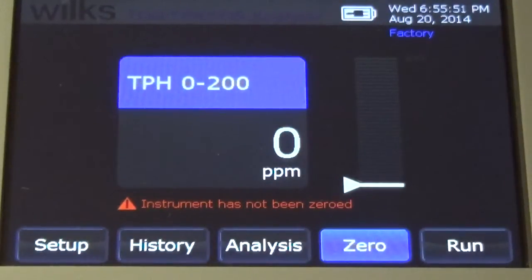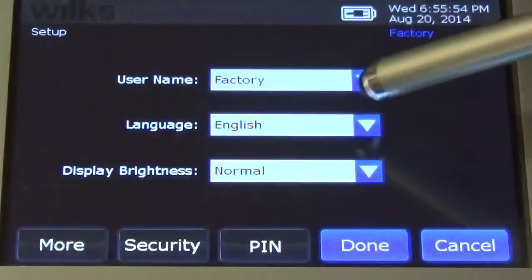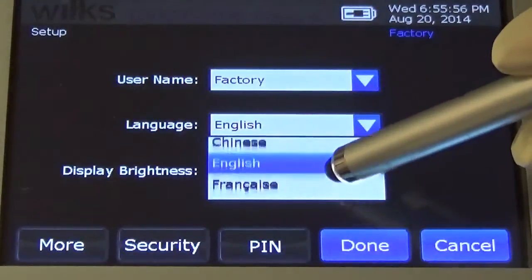To change the default language, select Setup, then scroll to the desired language and select Done.